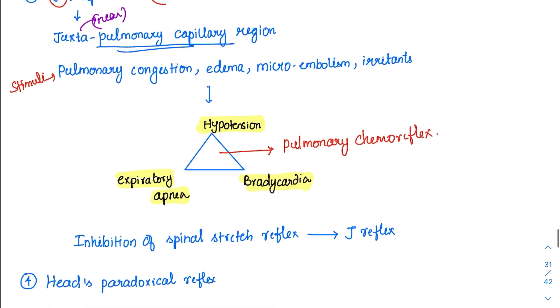And these J-receptors will also produce a reflex called J-reflex. There is one more interesting story behind this J-reflex. What it does is it inhibits the spinal stretch reflex. Suppose a person is constantly exercising and there is accumulation of pleural fluid. We don't want the person to exercise further and damage his lung. So what will happen is it will inhibit the respiratory muscles and it will make him stop exercising to avoid overexertion.